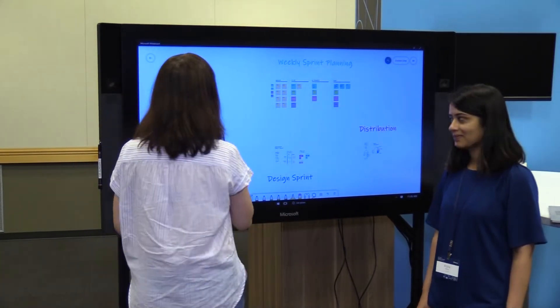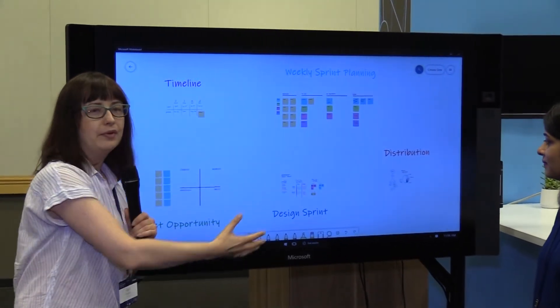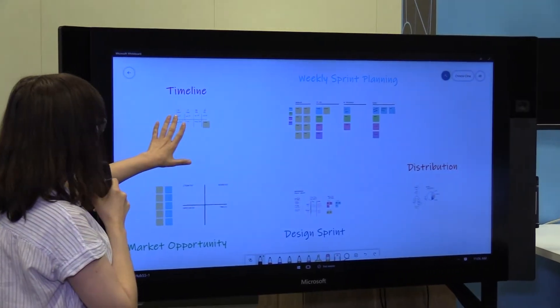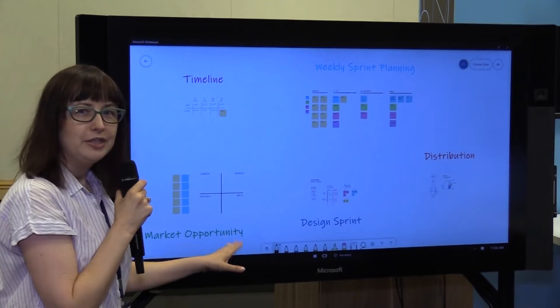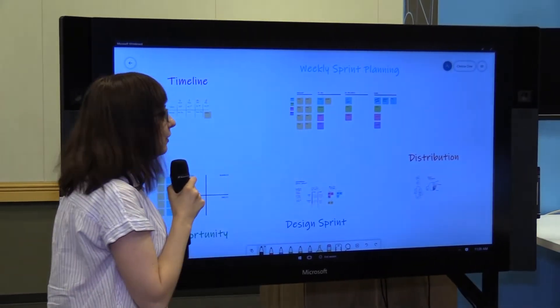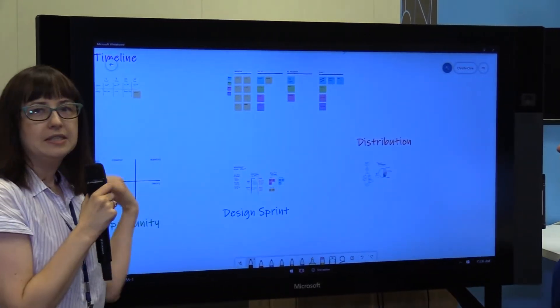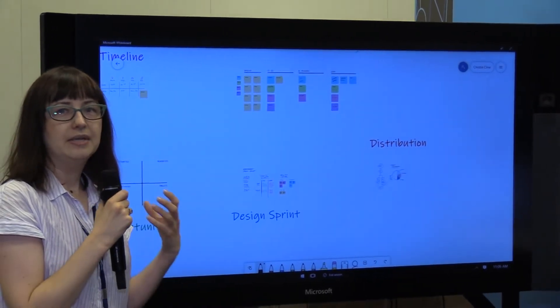So we'll just jump right in here. What I have here is a whiteboard with an entire project. You can imagine we've done the timeline, worked on the market opportunity from the product management side, the design sprint, the team has looked at what they're going to do all week. We've talked about distribution. All of these things are like a project room or a working space where the team gets together.